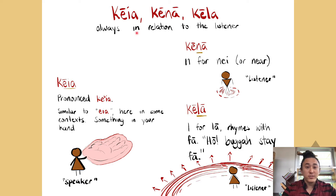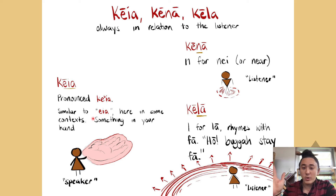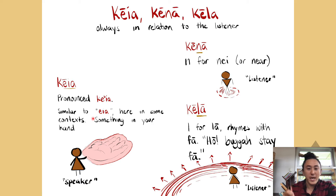We have three words: ke'ia, ke'na, and ke'la. Ke'ia is the easiest one to remember. There is no okina when you write out ke'ia, but native speakers pronounce it as if there is an okina there. Later on we'll learn the word eia — eia means 'here is something,' like eia ka peni, 'here's the pen.' Eia is something near the speaker, like 'this pen' — ke'ia peni. So ke'ia is always going to be in your space as the speaker.